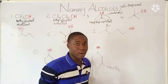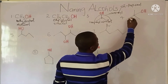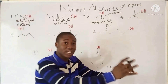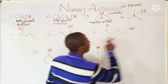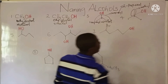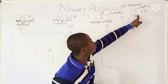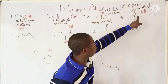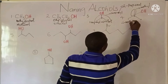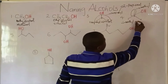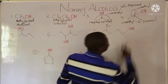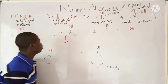Moving further to the next compound. Let's number — we start from here: carbon 1, carbon 2, and carbon 3. Still a 3-carbon chain compound called propane. But you can see this group here is called the methyl group, and the methyl group is at carbon 2. Also, the hydroxy group — the OH group, the alcohol — is at carbon 2. So it becomes 2-methyl, because the methyl group is at carbon 2, and 2-propanol because it is a 3-carbon chain.